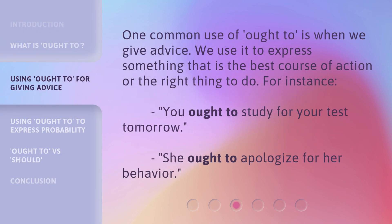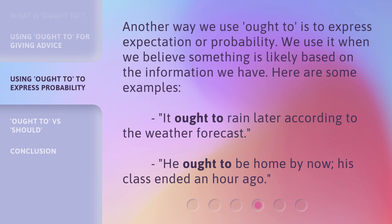One common use of ought to is when we give advice. We use it to express something that is the best course of action or the right thing to do. For instance: you ought to study for your test tomorrow; she ought to apologize for her behavior. Another way we use ought to is to express expectation or probability — when we believe something is likely based on the information we have. For example: it ought to rain later according to the weather forecast; he ought to be home by now — his class ended an hour ago.